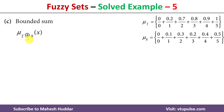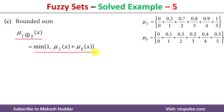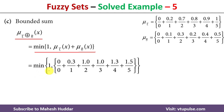Coming to the next one, known as bounded sum, denoted with its symbol. We calculate bounded sum using this formula: the minimum of 1 or the sum of membership value of x in both fuzzy sets. The sum of membership values: for element 0 it is 0 + 0 = 0; for element 1 it is 0.2 + 0.1 = 0.3, and so on. We then compare 1 against each of these sums and take the minimum value.